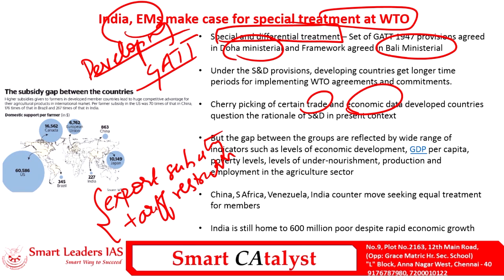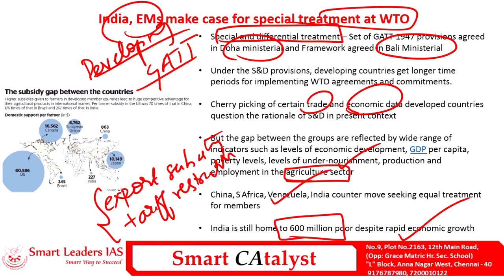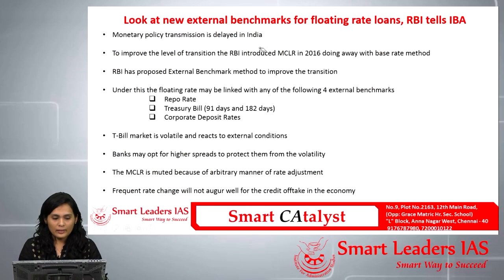Despite development made by developing countries, nations like India, China, Venezuela, and South Africa are still poorer compared to developed countries. For example, India is still home to 600 million poor despite rapid economic growth. The gap between developing and developed countries is also widely reflected in indicators beyond GDP and poverty, such as undernourishment, production and employment gaps, and the agricultural sector. Mutual treatment between the two groups is necessary for smooth implementation of WTO's multilateral framework.